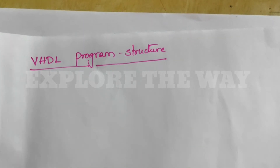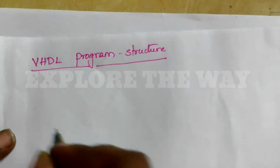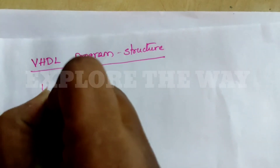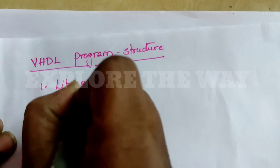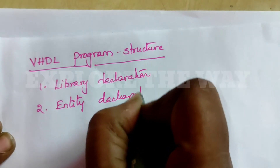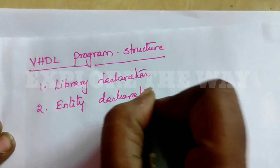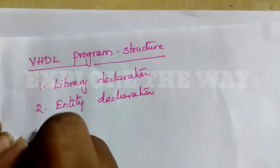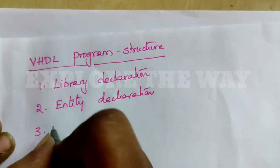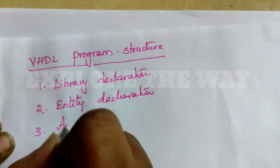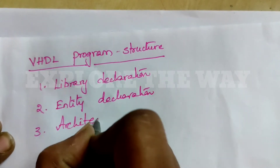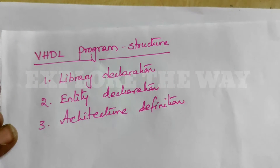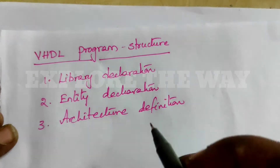The structure of VHDL consists of three parts. The first one is library declaration, the second one is entity declaration, and the third one is architecture definition. These are the three parts.